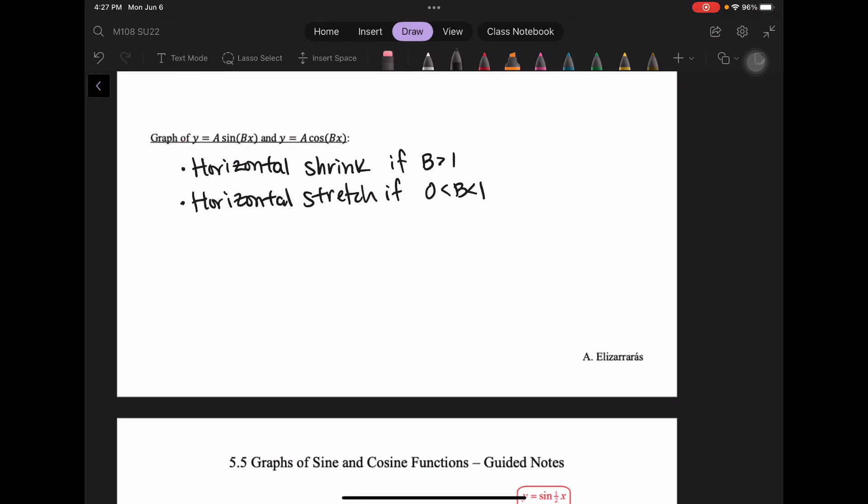So then we have the horizontal stretch or shrink. We call it our period and we can calculate the period by adjusting by that factor of b. So our period can be found by taking 2 pi over the b value because our period is originally 2 pi and we divide it by b to find out how we adjust based on whatever that b value is.